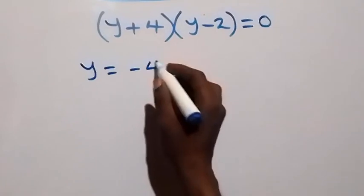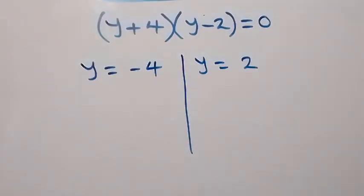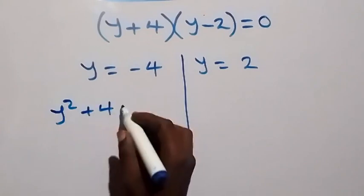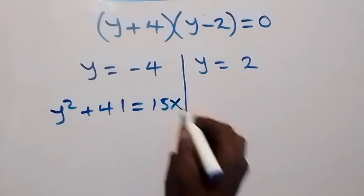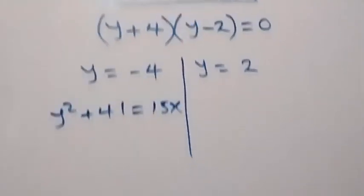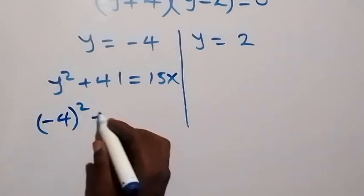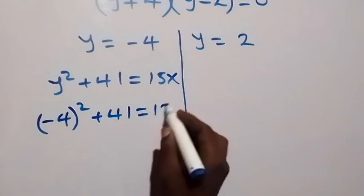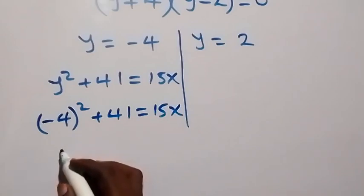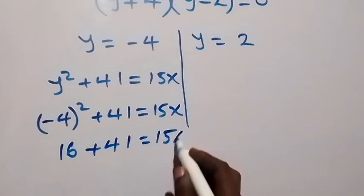From the factored form, we get two cases: y equals minus 4 or y equals 2. Recalling that y squared plus 41 equals 15x, for the first case when y equals minus 4: (minus 4) squared plus 41 equals 15x, so 16 plus 41 equals 15x.